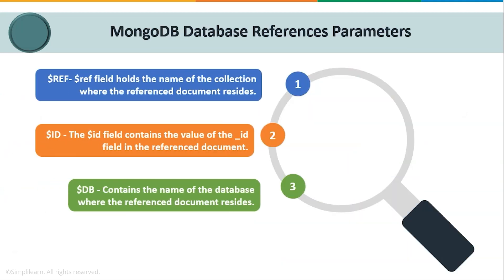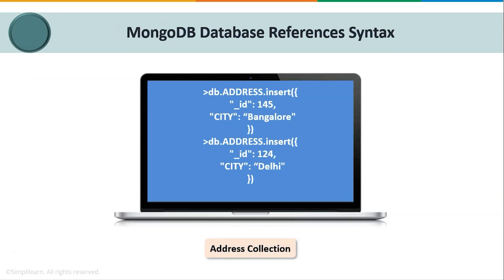Now let's understand the various parameters used when writing database reference syntax. First, we have the $ref keyword — the ref field holds the name of the collection where the referenced document resides. Next, the $id field contains the value of the ID field in the referenced document. Finally, the optional $db field contains the name of the database where the referenced document resides. These are the three important fields used to implement DBRef relationships in MongoDB.